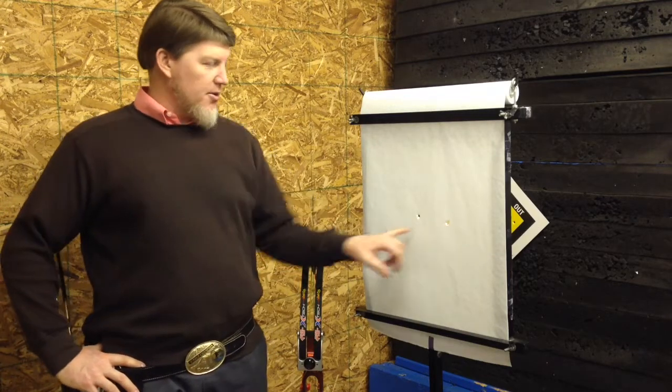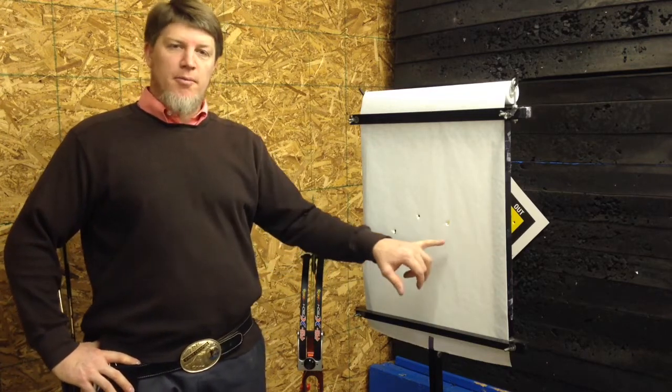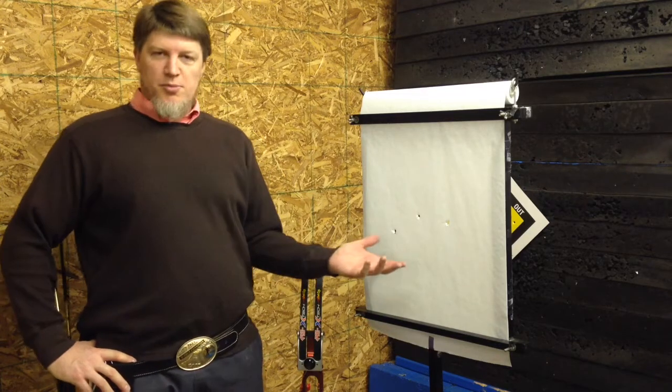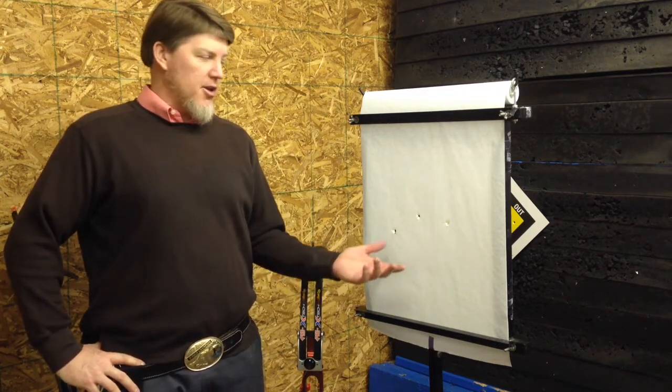As you can see, we have three different arrow holes. All of them are bullet holes through paper. What does paper tuning mean? What is it for and how do you use it?